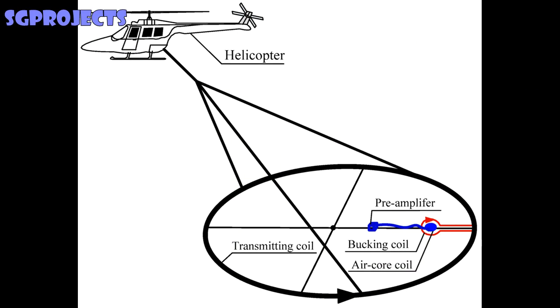Now let's talk about the configuration of the system. The whole circular-shaped system is called a helicopter's transient electromagnetic system.